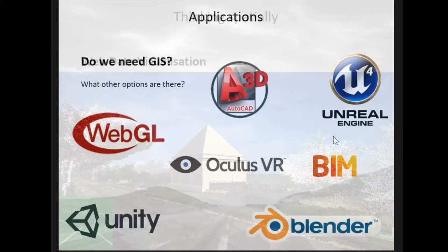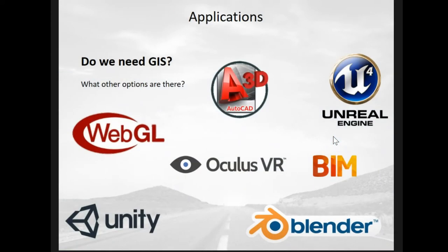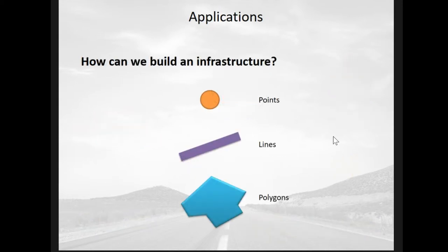Moving to the question: do we need a 3D GIS? At the moment there's a wide diversity of applications — augmented reality and virtual reality go to Unity, export to smartphone; web applications use WebGL; then there's Building Information Modelling and many other tools. I want to bring something back to the whole. If we're going to do that, how can we build an infrastructure that brings everything together? We deal with points, lines, and polygons — that's how we model space.